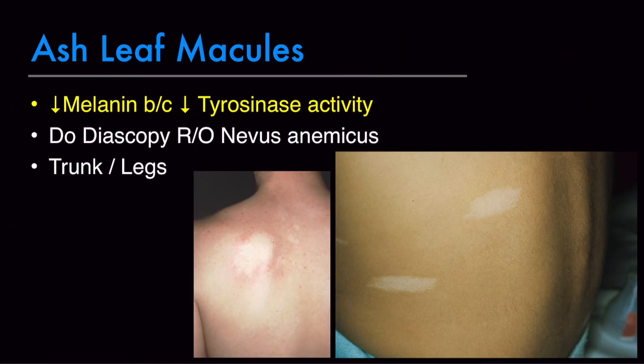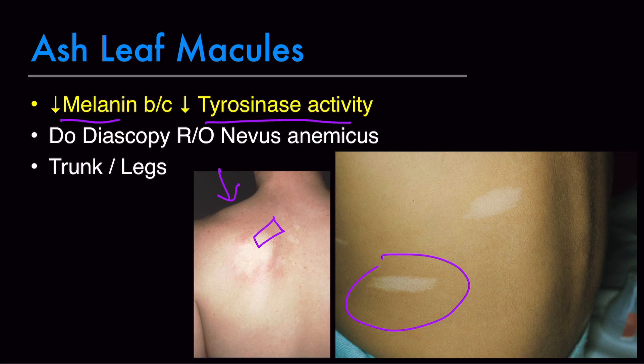Ash leaf macules are hypopigmented patches present on the trunk and limbs. Histologically, melanocytes are present in these lesions, as opposed to vitiligo in which melanocytes are absent. In ash leaf macules, there is decreased melanin due to decreased tyrosinase activity. Differentials include nevus anemicus, nevus depigmentosus, vitiligo, and post-inflammatory hypopigmentation. In nevus anemicus, when we do diascopy — pressing a glass slide on the border of these lesions — nevus anemicus merges with the surrounding skin, but this won't happen with an ash leaf macule.